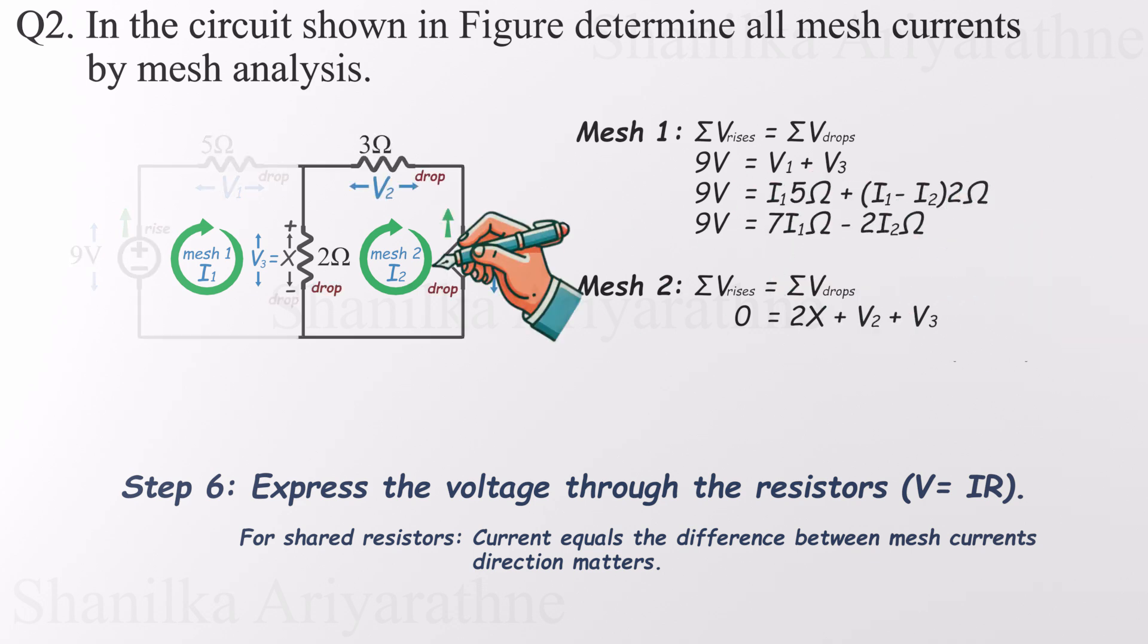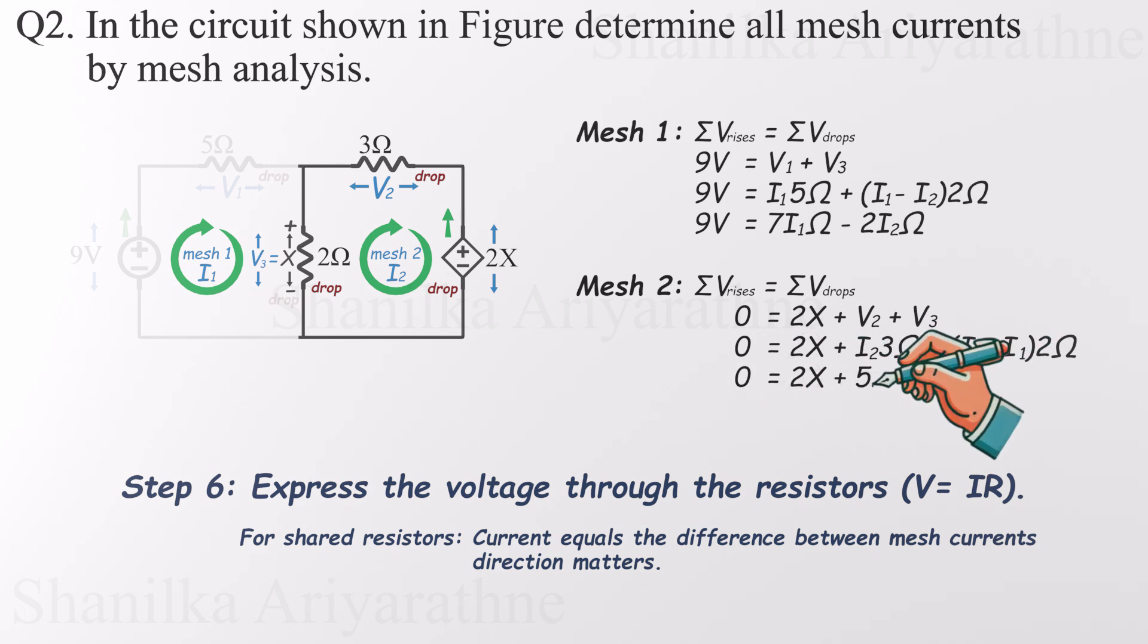Moving on to mesh two, the process stays the same. V2 is straightforward, just I2 times 3 ohms. But when we get to V3, which is shared between both meshes, we can't simply copy the expression from mesh one. Since we're now analyzing mesh two, we have to flip the order of the subtraction. V3 becomes I2 minus I1 times the resistance. That flip is crucial. Always make sure the current from the mesh you're analyzing comes first in the expression. It's a small detail, but getting it right keeps your signs accurate and your final solution correct. Paying close attention to current direction in shared components might seem like a small detail, but it's a deal-breaker for getting the right answers.